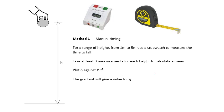Why? We have s = ut + ½at². Since u is zero, s = ½at². Since s is the distance h, we get h = ½g·t² because g is the acceleration. So if you plot h on the y-axis and ½t² on the x-axis, the gradient should be g.